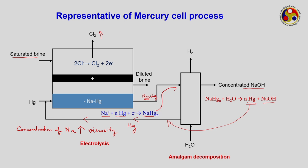The recycling becomes tougher when viscosity increases. This method has limited application despite producing very pure NaOH. The mercury cell consumes the highest power among all three methods. Additionally, mercury is poisonous in nature, and the viscosity issues in sending the amalgam to the decomposer make it non-viable. The mercury cell has largely been replaced by the diaphragm and membrane cells.